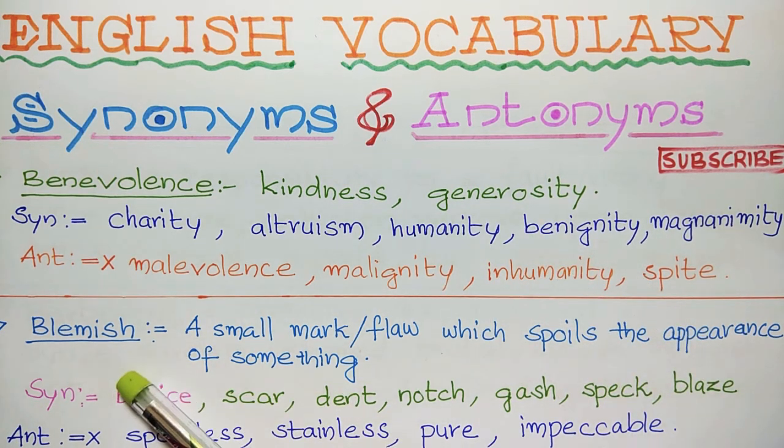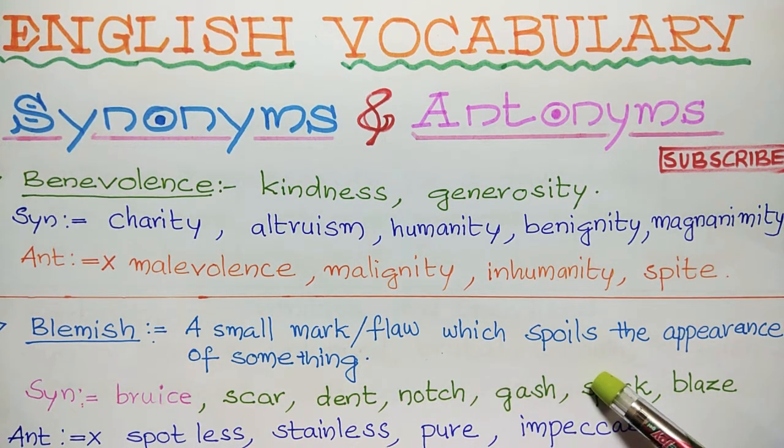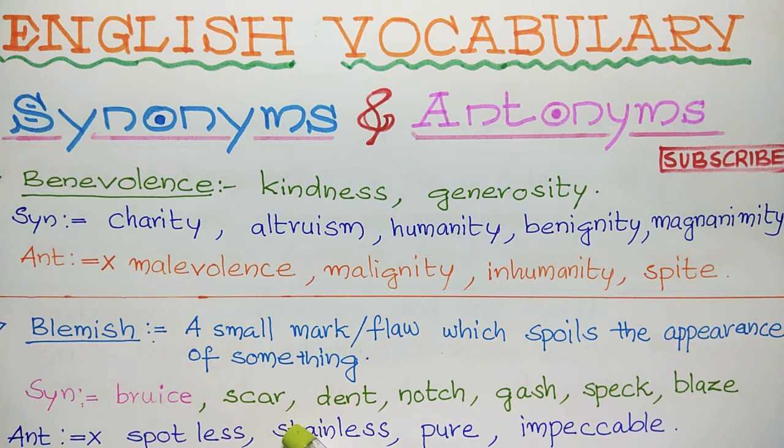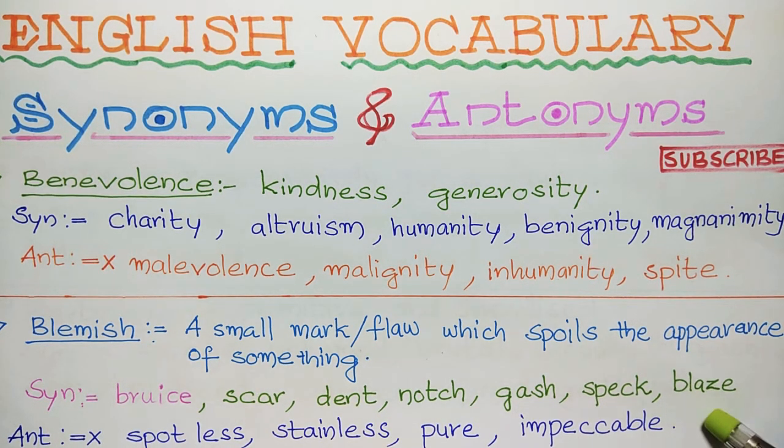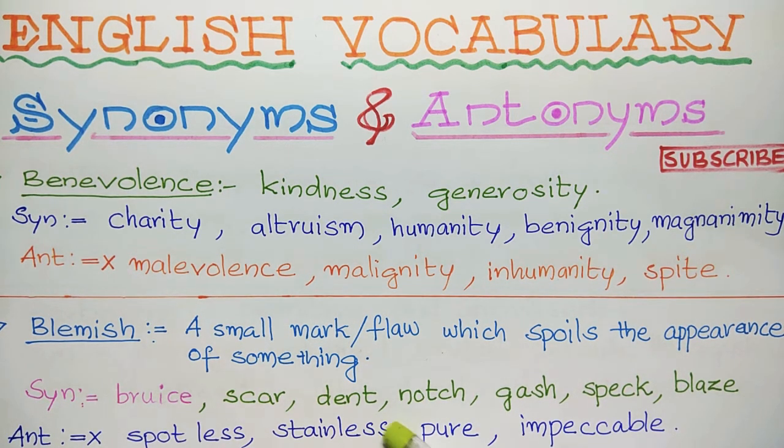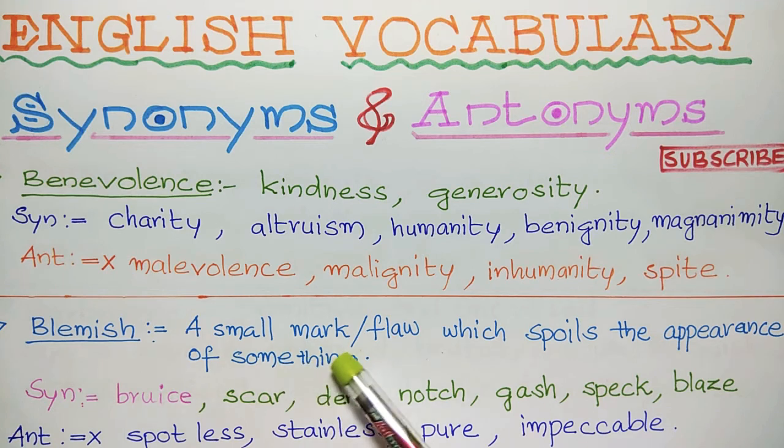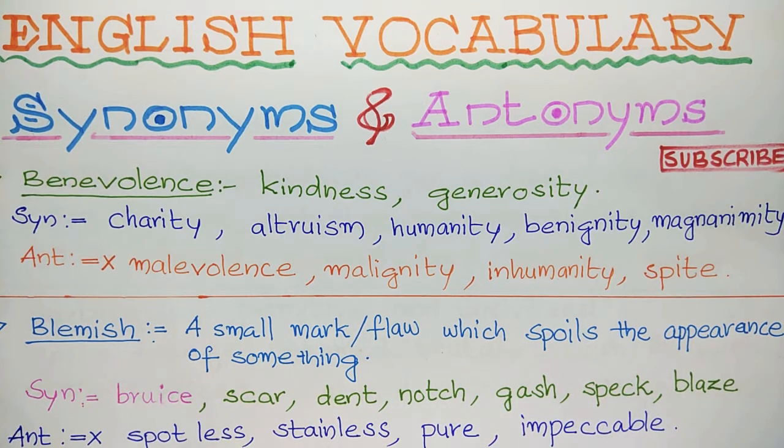Next is blemish. Blemish means a small mark or flaw which spoils the appearance of something. Synonyms: bruise, scar, dent, notch, gash, speck, blaze. Antonyms are spotless, stainless, pure, impeccable.